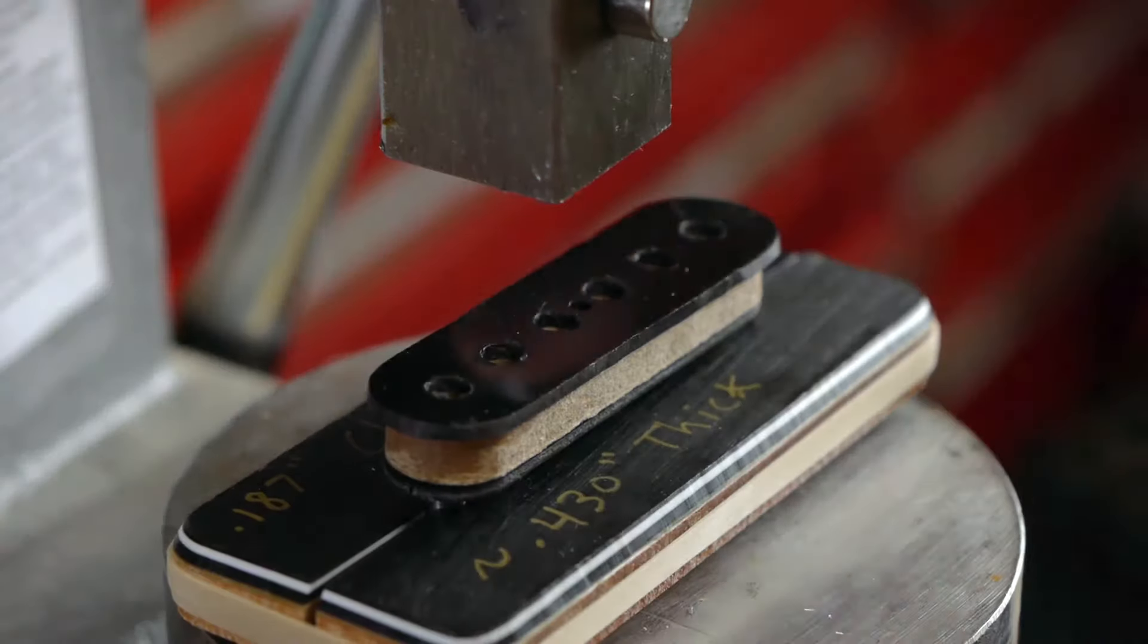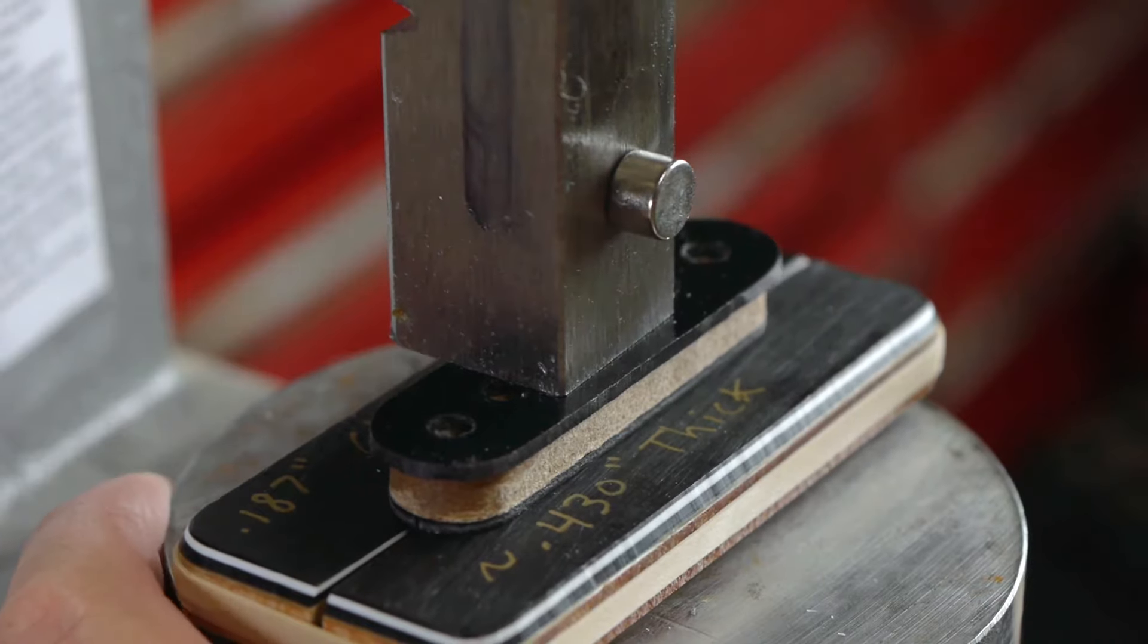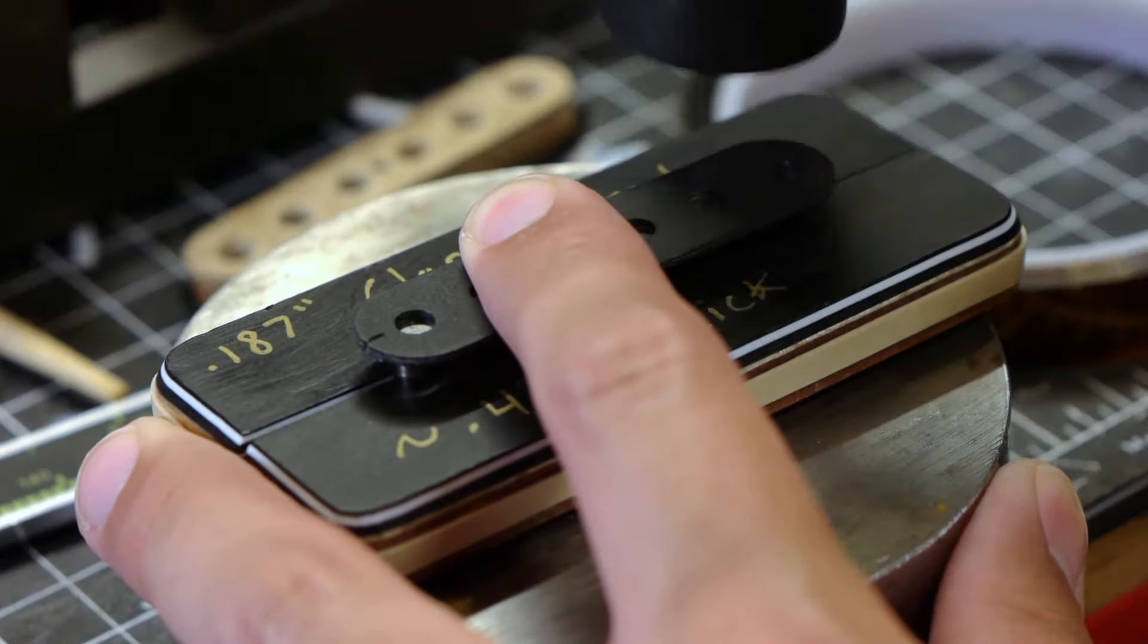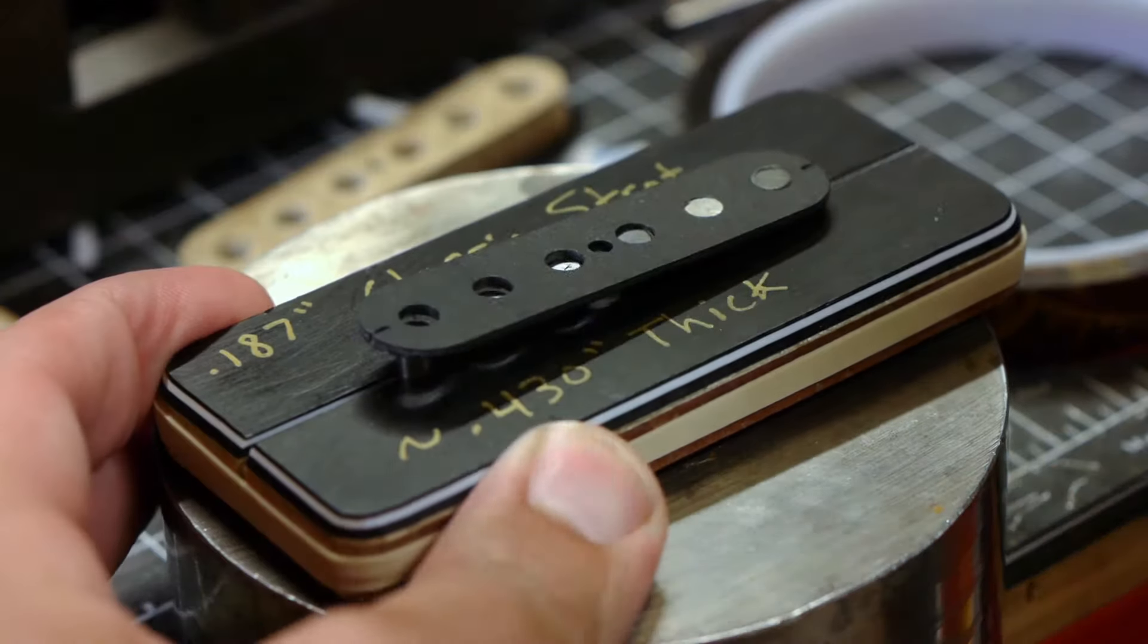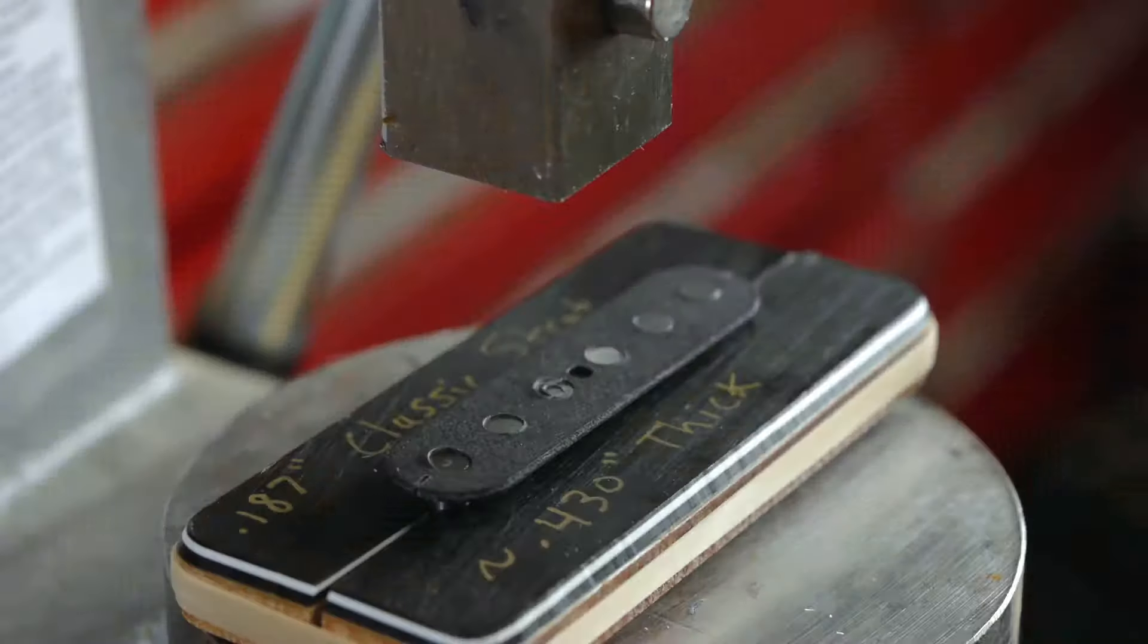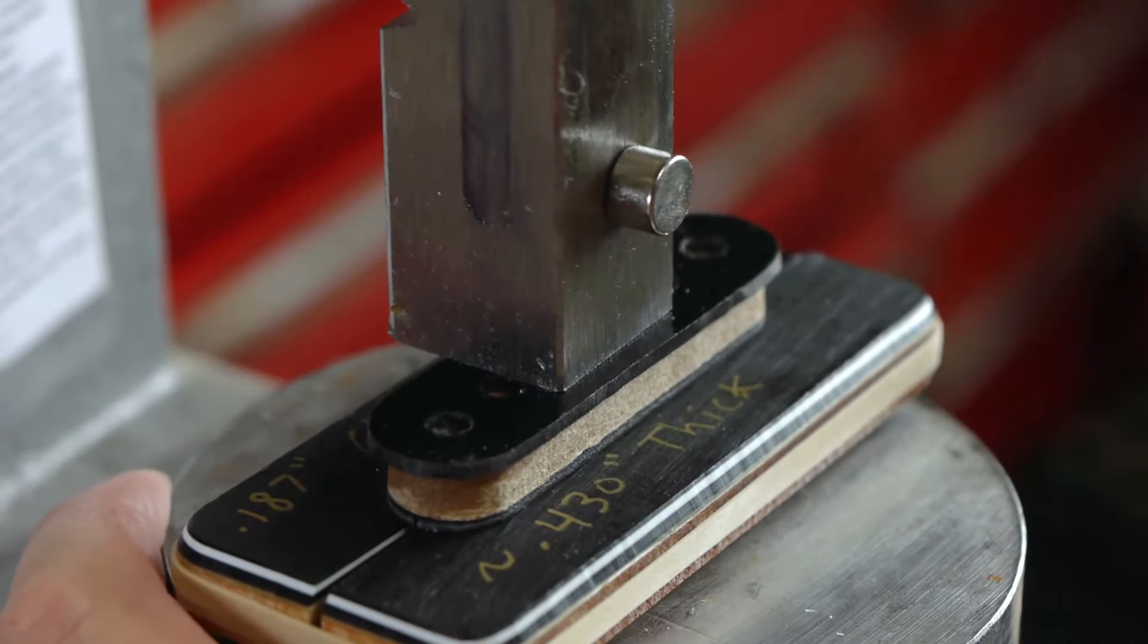You can also press the top flatwork piece with the arbor press. However, when using this method, I still lightly hammer the flatwork onto the pole pieces to get it started and to make sure it stays centered while being pressed down.